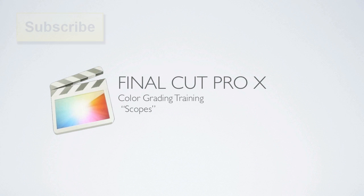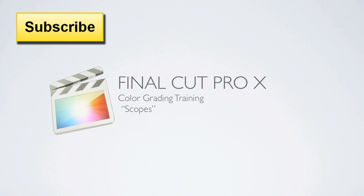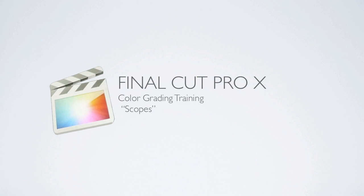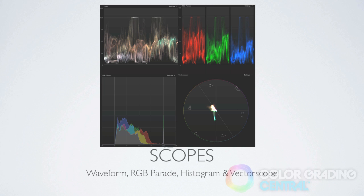Hi, my name is Dylan Riddle of Color Grading Central and in this video tutorial I'll be covering how to read scopes, as they can be a very powerful tool and in some cases essential in color grading. The new scopes in Final Cut Pro X are much improved over previous versions of Final Cut and introduce some really cool new features. The scopes we'll be covering are the Waveform, RGB Parade, Histogram and Vectorscope. So let's dive right in.